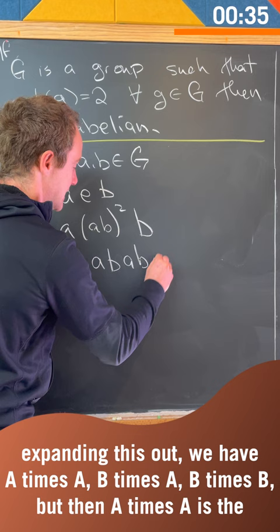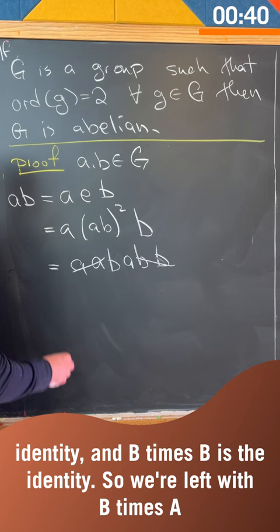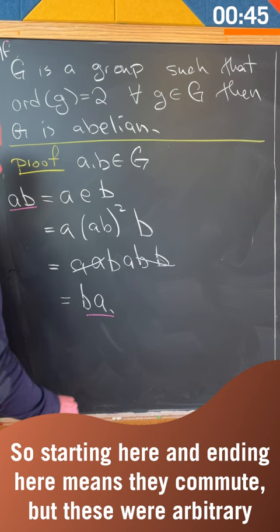But then a times a is the identity and b times b is the identity, so we're left with b times a. So starting here and ending here means they commute, but these were arbitrary, so it's an abelian group.